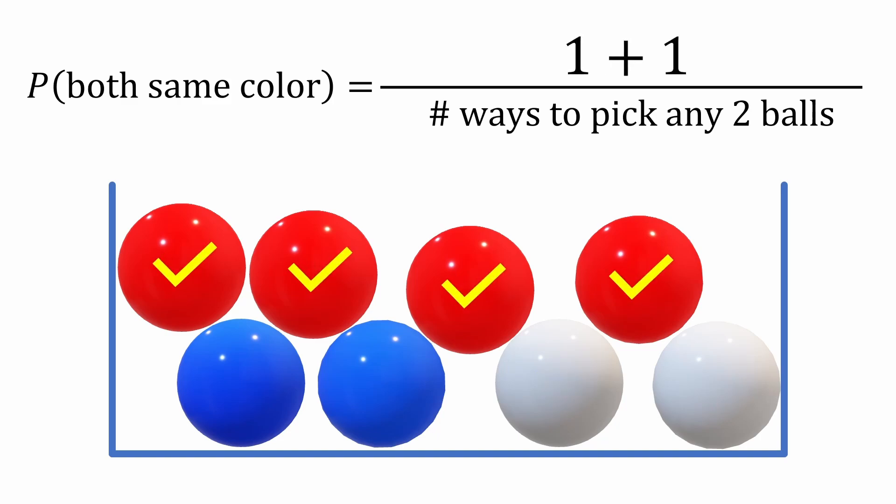And we have four red balls, so we need to calculate how many ways we can pick two of them at a time from a total of four. That would just be four choose two.